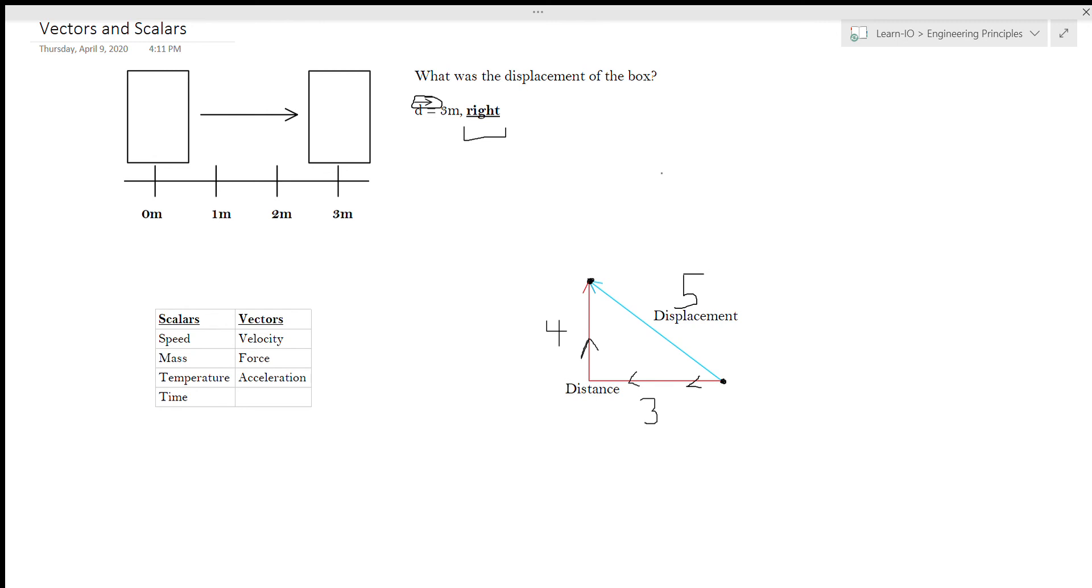However, whenever you're searching online for problems or for equations or formulas, and even in high school whenever you get your formula charts, your equations and the values will always have arrows on top of them if they're vector. Thank you very much.